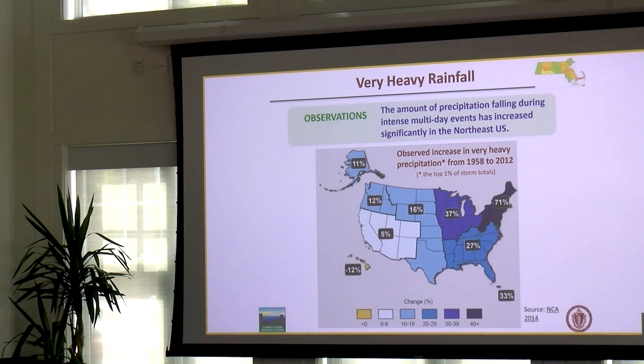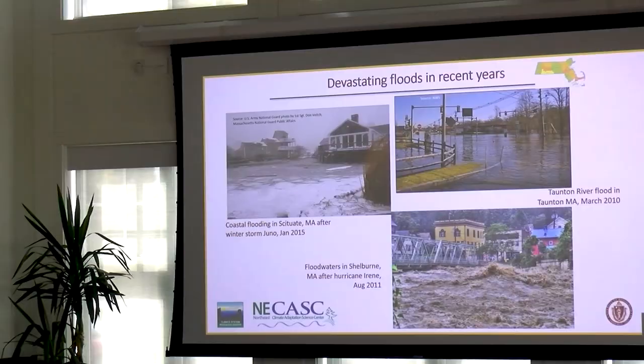We're also getting a lot more rain at once. Increases in extreme heavy precipitation are increasing across the country, except Hawaii. In the Northeast, we've seen a 71% change in extreme events. I now know that my basement will flood if we have more than 7 inches in 24 hours. And we all remember these storms — whether it's flooding out on the coast, or that amazing picture of the river almost going over the Bridge of Flowers in Shelburne Falls.